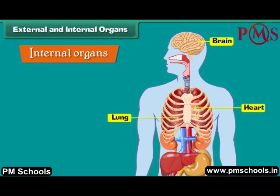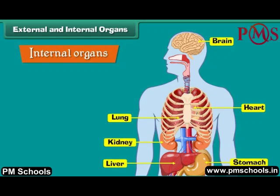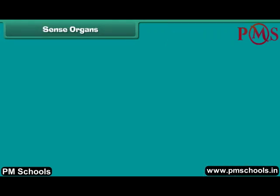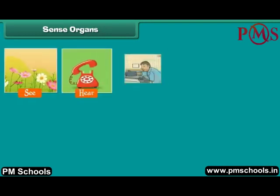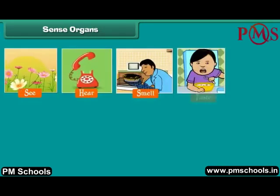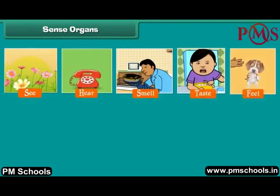The organs that cannot be seen from outside are called internal organs — for example, brain, heart, lungs, stomach, liver, kidneys and bones.